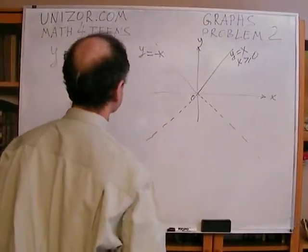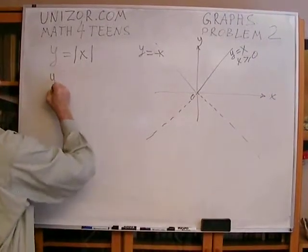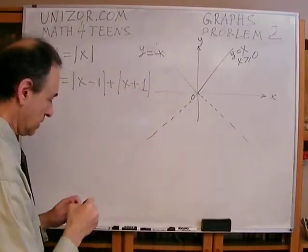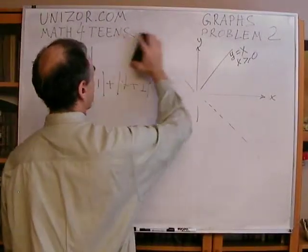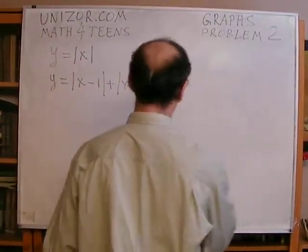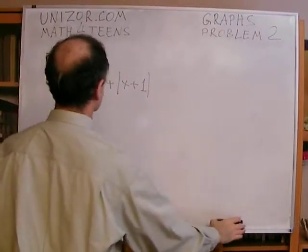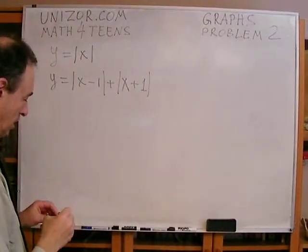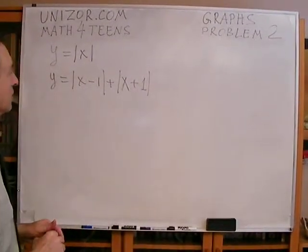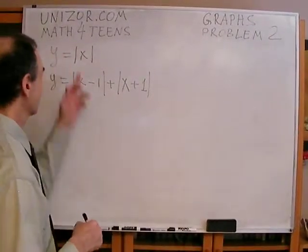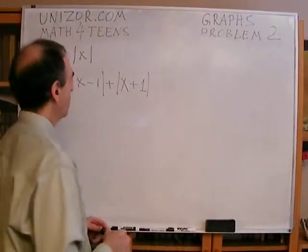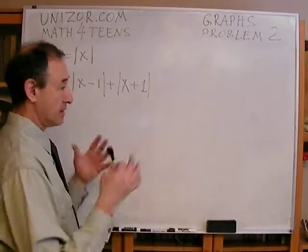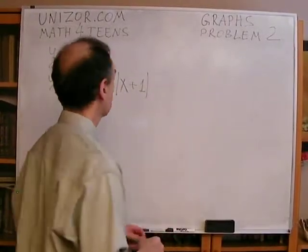Now a more difficult problem: y equals absolute value of (x minus 1) plus absolute value of (x plus 1). Here you can press the pause button and try to solve this yourself. There are actually two ways of drawing this graph, same as in the previous case. One way is to separately graph absolute value of (x minus 1) and absolute value of (x plus 1), then add them together.